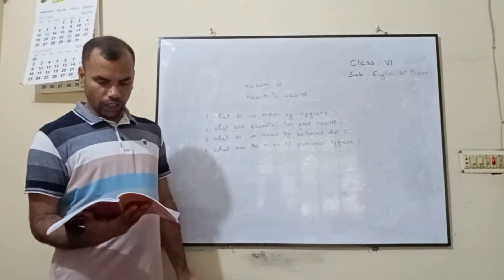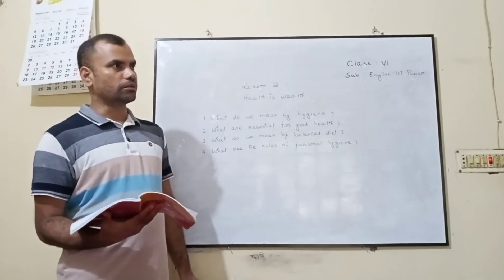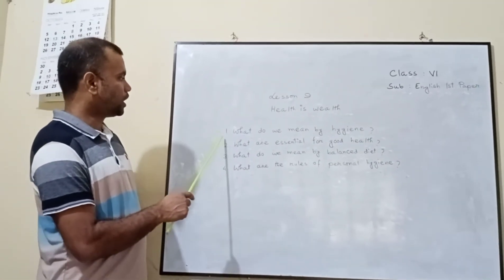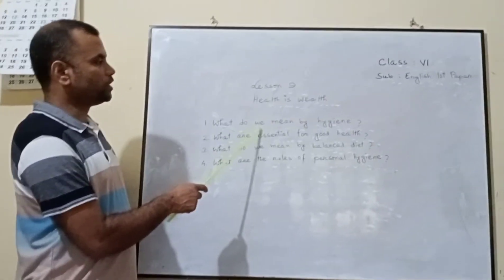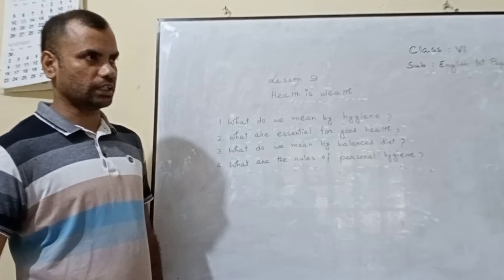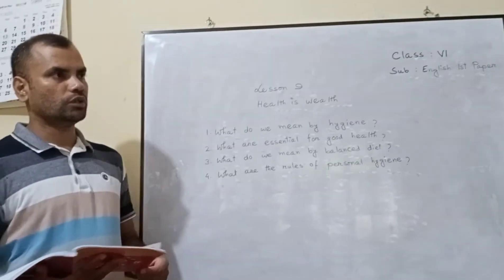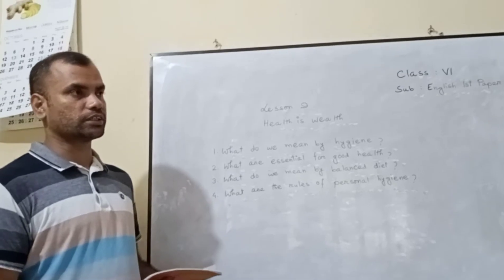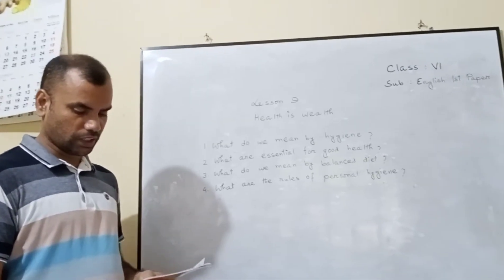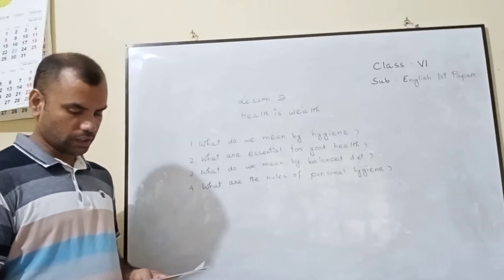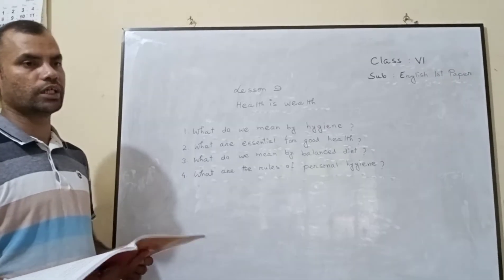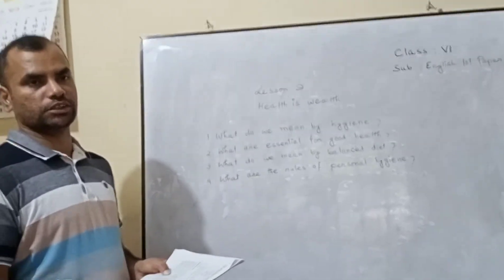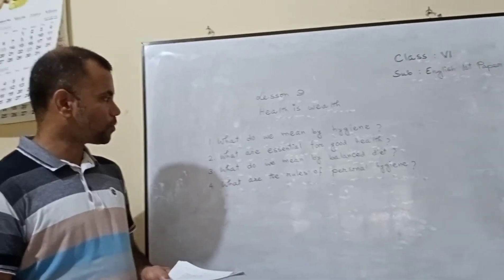So, on the basis of this passage, dear students, I have given up the board. If you look at the board, you will see some questions written on the board. The first one is, what do we mean by hygiene? If you go through the text manually, then you will be able to answer the question. Because the answer is written in the second paragraph. You will find that the rules and practices of keeping good health are called hygiene. So, the answer will be the rules and practices of keeping good health are called hygiene. It is directly given in the passage. So, it is easy for you, I think.